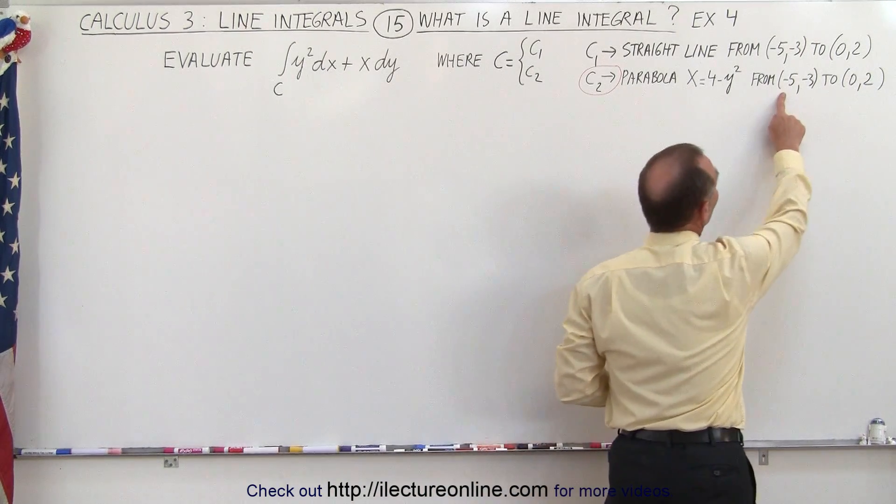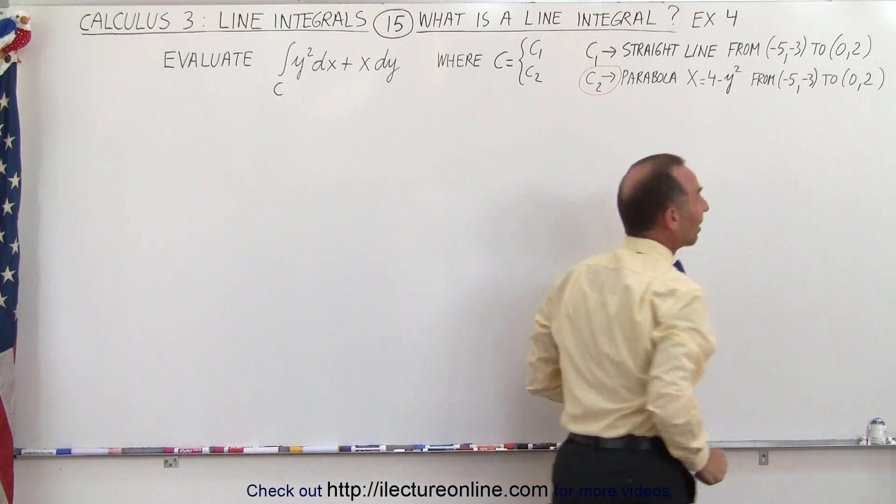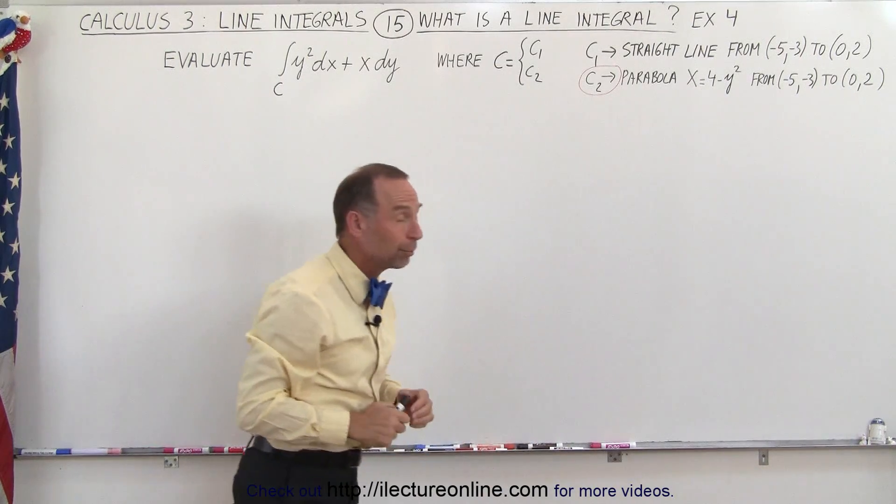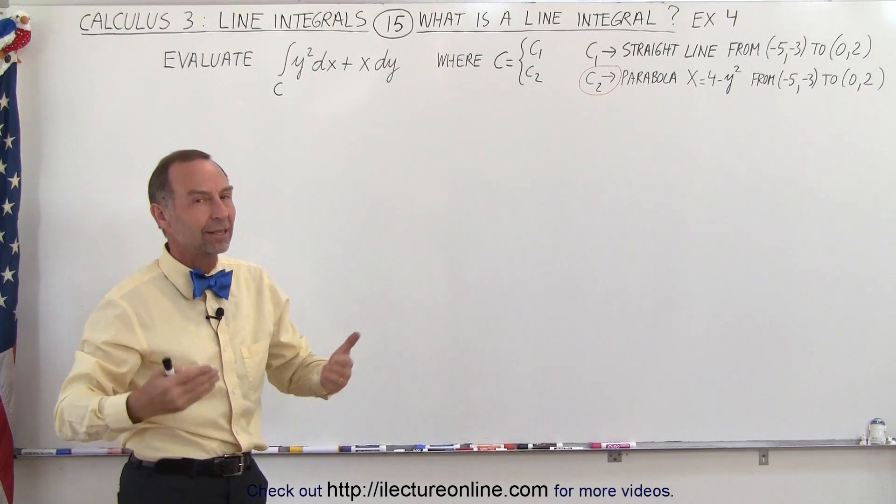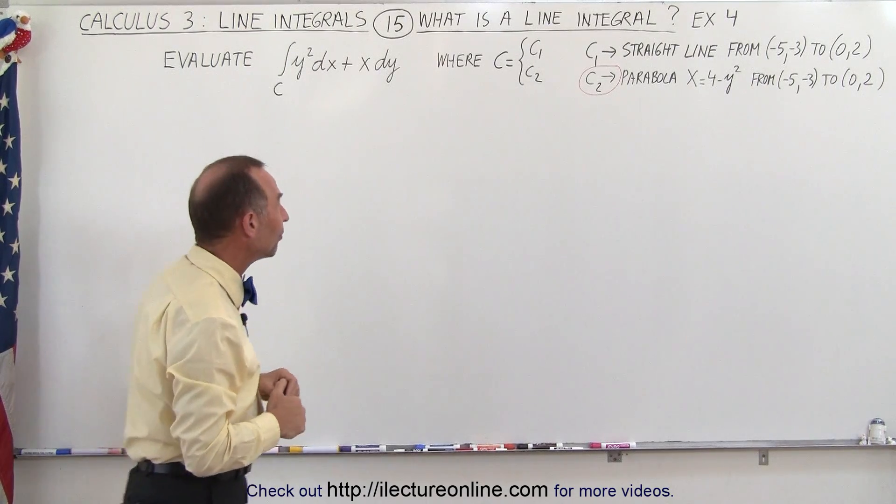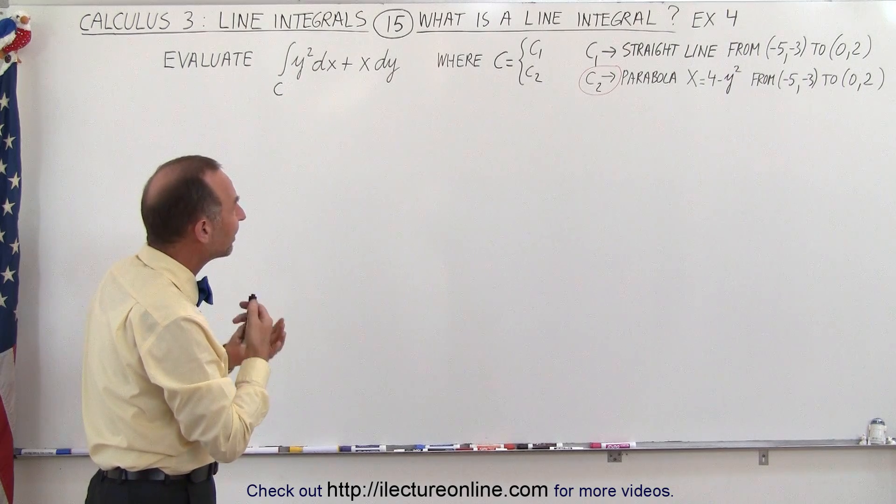We're again starting from the same point and ending at the same point as we did in the previous example, but since we're taking a different path and it's a parabola instead of a straight line, we do expect to get a very different answer. So how do we do that this time?